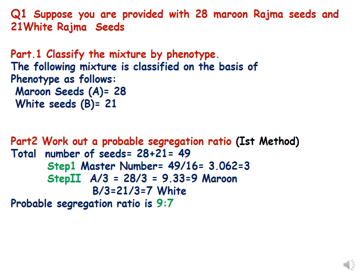For example, if you see there are two types of seeds, you can classify them by color or shape. Suppose in the petri dish you are given two kinds of seeds — you have given them the name of two phenotypes: maroon seeds and white seeds. When you count them, you find there are 28 maroon seeds and 21 white seeds. So the first question — classify the mixture by phenotype — is answered: maroon seeds and white seeds.